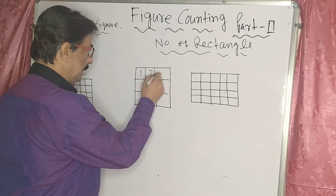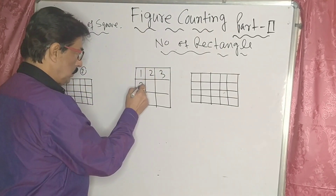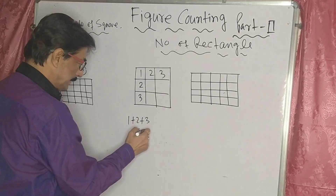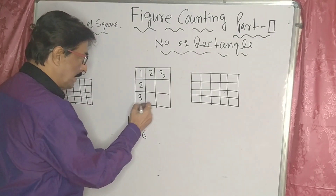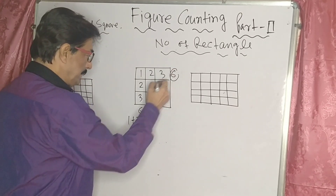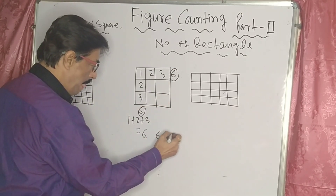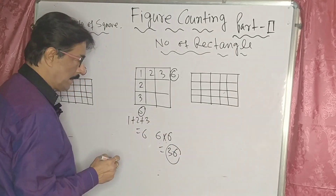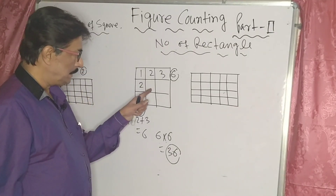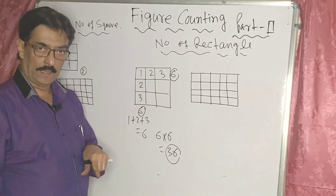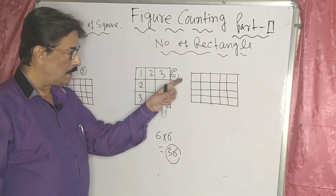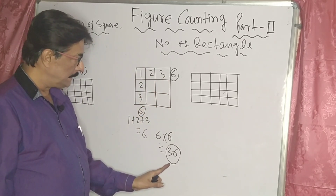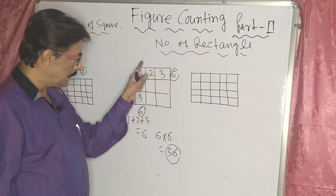Count the lines: 1, 2, 3 horizontally and 1, 2, 3 vertically. Add the horizontal numbers: 1 + 2 + 3 = 6, so the horizontal sum is 6. The vertical sum is also 6. Now multiply these two numbers: 6 × 6 = 36. So there are 36 rectangles inside the figure. Remember, in this figure every square is also treated as a rectangle.